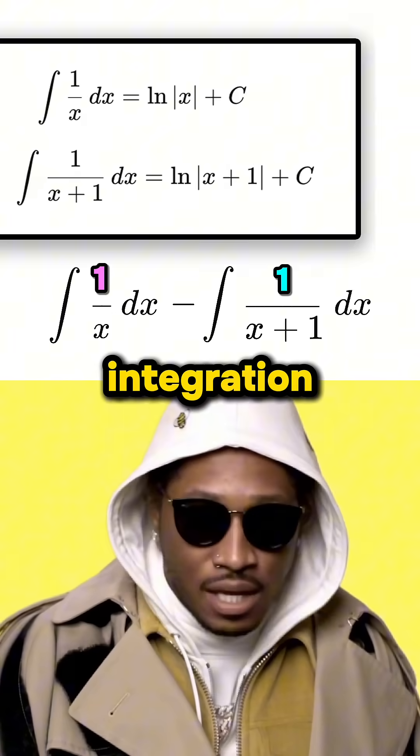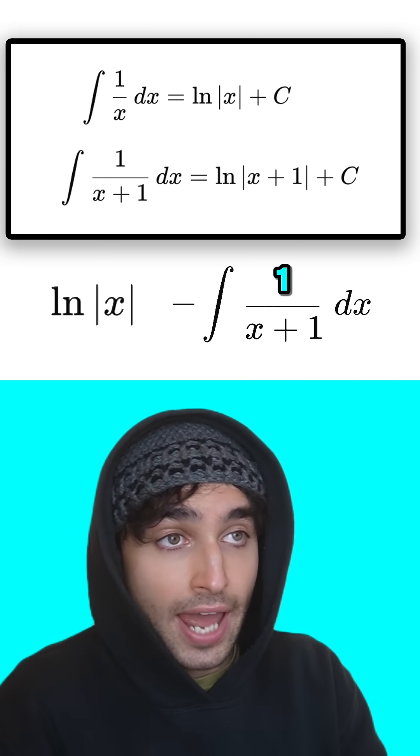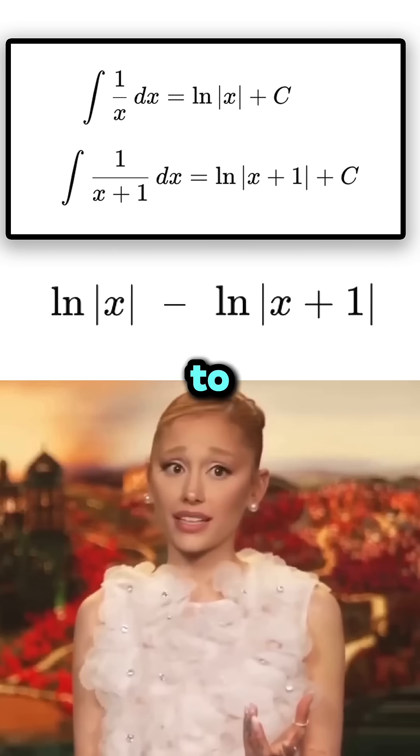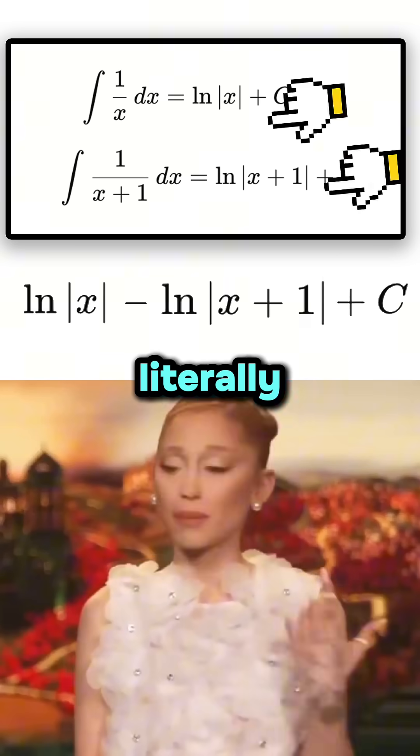We can finish by using these integration rules. So the answer is ln|x| minus ln|x + 1|. You're an amateur. You forgot to add C to your answer, dummy. It's literally up here to remind you.